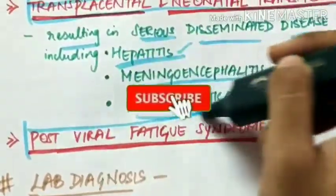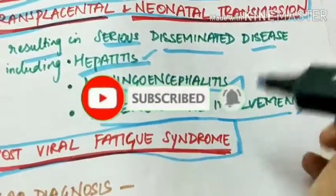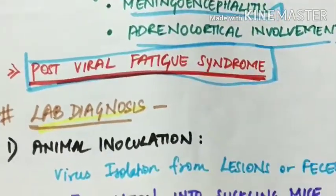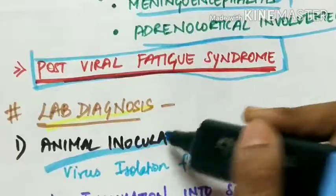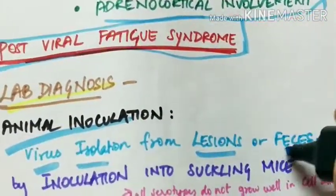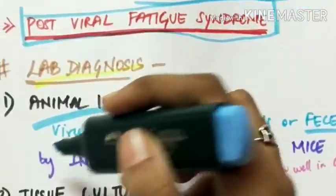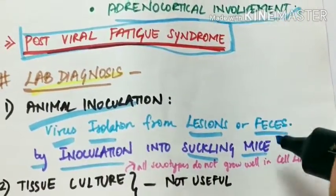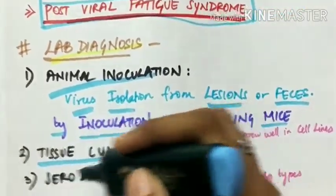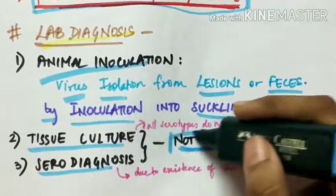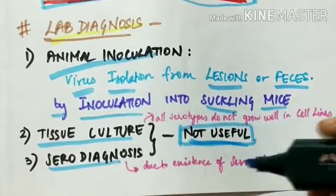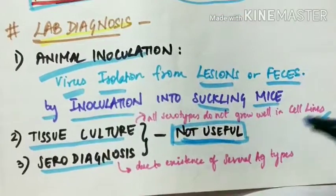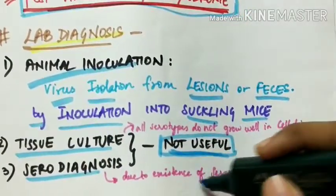Group B viruses also cause post-viral fatigue syndrome. For lab diagnosis, animal inoculation is performed: the virus is isolated from lesions or feces and inoculated into suckling mice by intracerebral, subcutaneous, or intraperitoneal methods. Tissue culture and serodiagnosis are not very useful because not all serotypes grow well in cell lines, and serodiagnosis is limited due to the existence of several antigenic types.